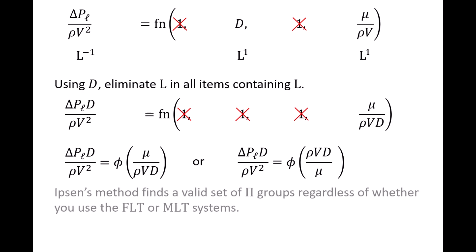It should be noted that in the uncommon situation where the number of basic dimensions differs in the FLT and MLT systems, Ibsen's method will still produce the correct number of pi groups regardless of which dimensional system you use.